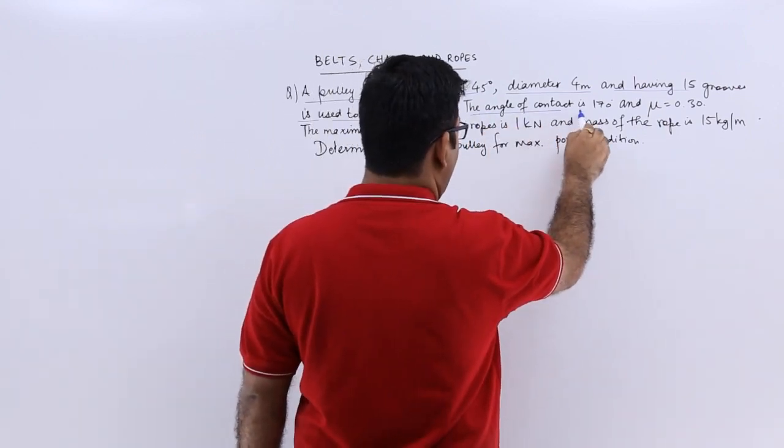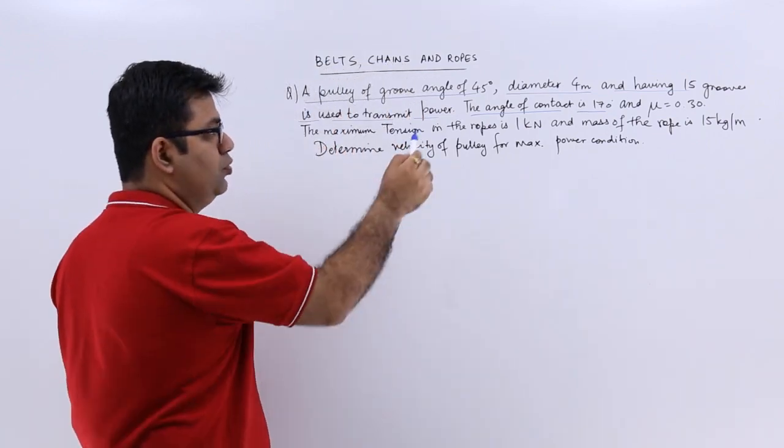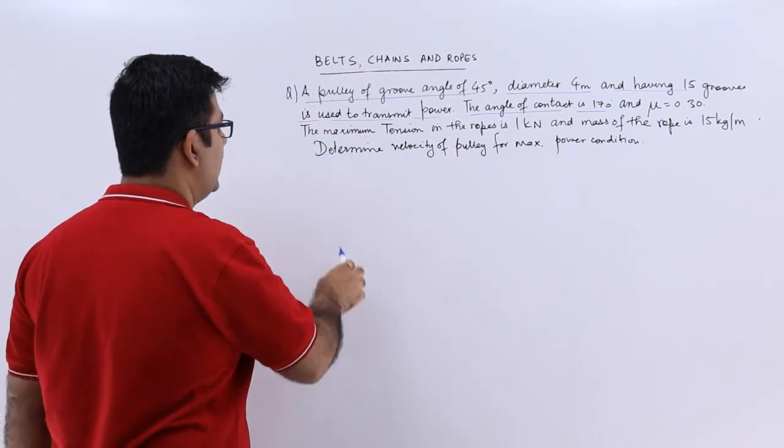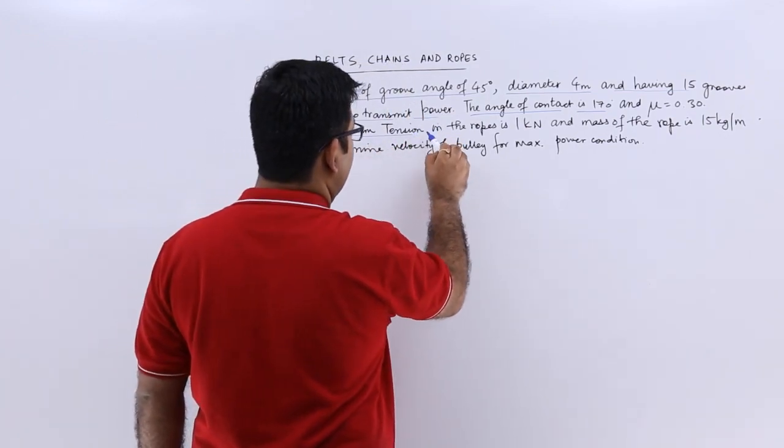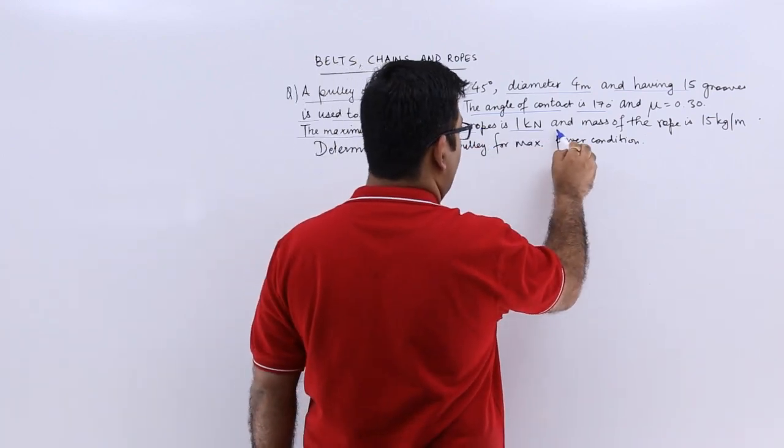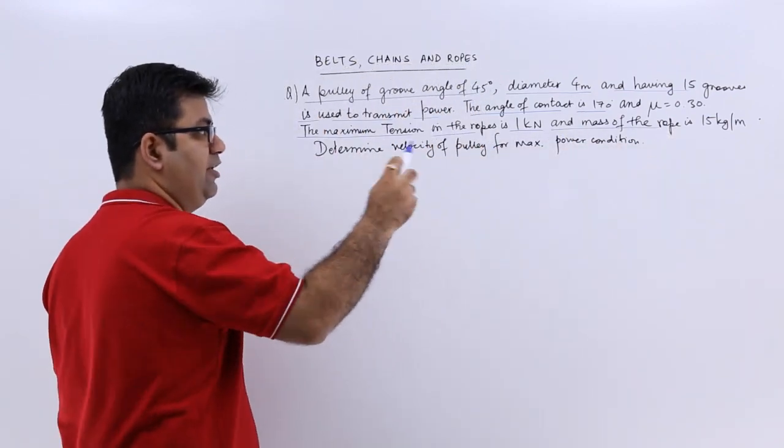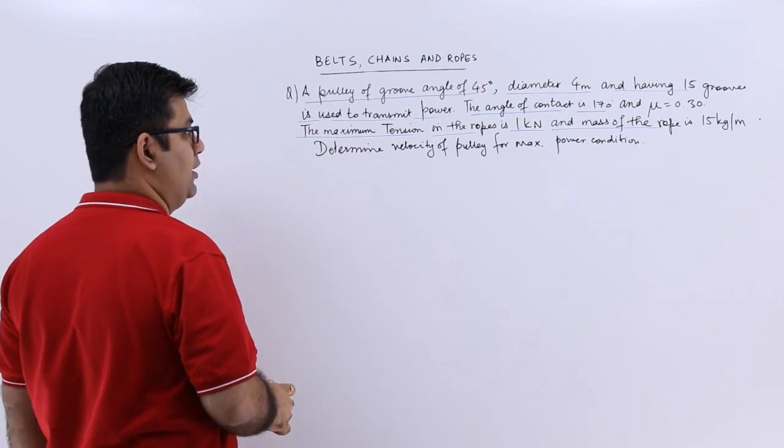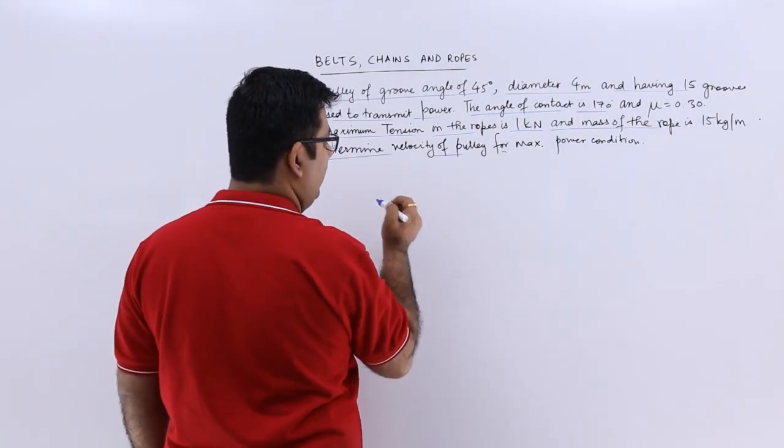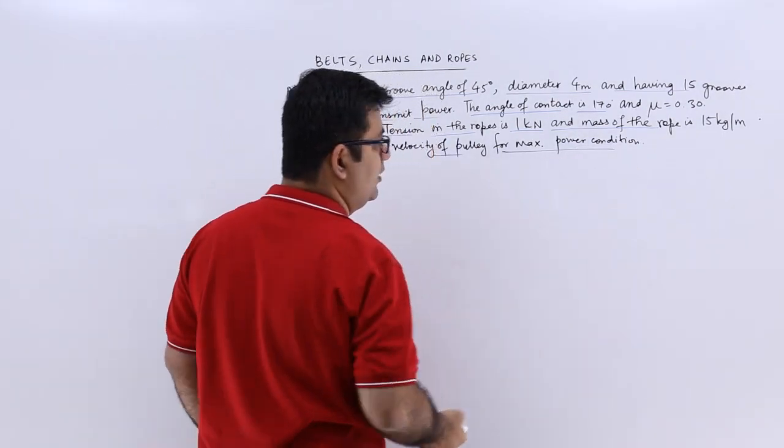The angle of contact is 170 degrees and mu is 0.30. The maximum tension in the ropes is 1 kilonewton and the mass of the rope is 15 kilogram per meter length. Determine the velocity of the pulley for maximum power condition.